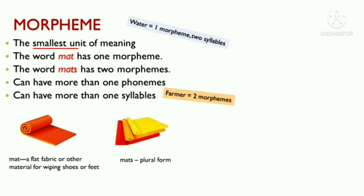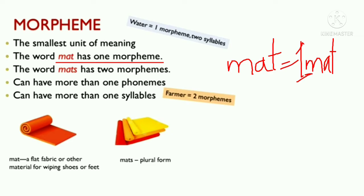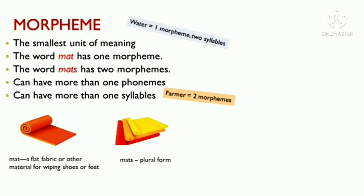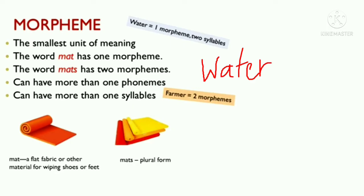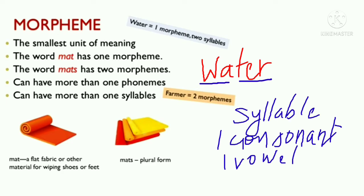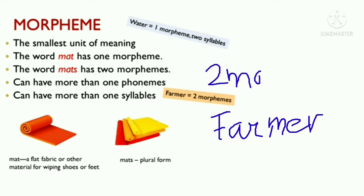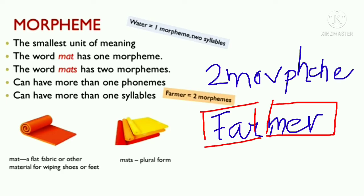A morpheme is the smallest unit of meaning. The word 'mat' has one morpheme because it means just one mat. Whereas 'mats' has two morphemes, meaning more than one. A syllable is one consonant and one vowel — for example, 'water' has two syllables: wa-ter. The word 'farmer' has two morphemes: 'farm' and 'er'.